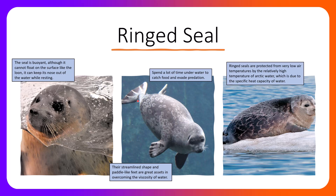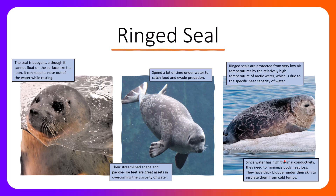Ringed seals are protected from very low air temperatures by the relatively high temperatures of arctic water, which is due to the specific heat capacity of water. Even though air temperatures are incredibly low, water temperatures are always higher than the air temperature simply because water has a high specific heat capacity — meaning it can absorb a lot of energy without actually dropping or changing temperature. We know that while air temps can be below freezing, the water is likely not at or below freezing because it is still in liquid form. Seawater actually freezes at a lower temperature than fresh water. Since water has high thermal conductivity, seals need to minimize body heat loss, and they have a thick blubber layer under their skin to insulate them from cold temperatures, which is really important in maintaining homeostasis and a constant internal temperature.